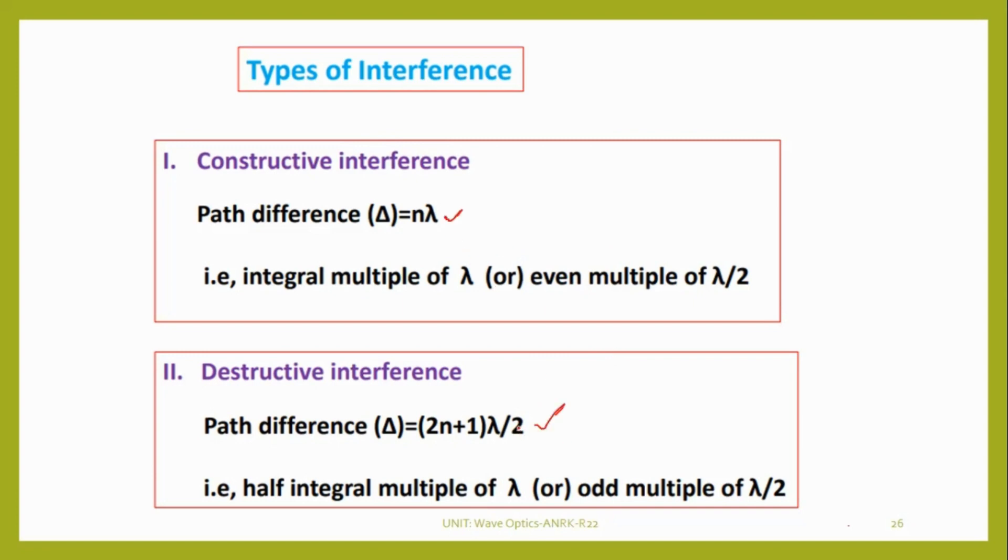From path difference, we can get the phase difference. If the path difference is nλ or integral multiple of λ or even multiple of λ/2, then we will get constructive interference. Destructive interference we will get whenever the path difference is (2n+1)λ/2.